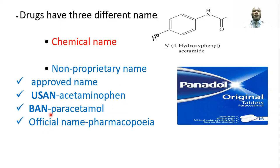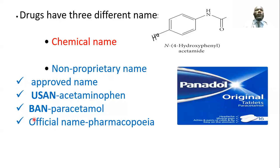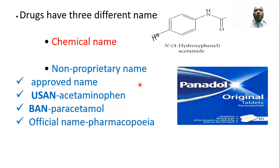These are special councils responsible for assigning names soon after a drug's introduction. For paracetamol, the United States Adopted Name is acetaminophen, while according to the British Approved Name, it is paracetamol. This generic or non-proprietary name is most commonly written by physicians when prescribing drugs — prescriptions are written in the form of generic names.